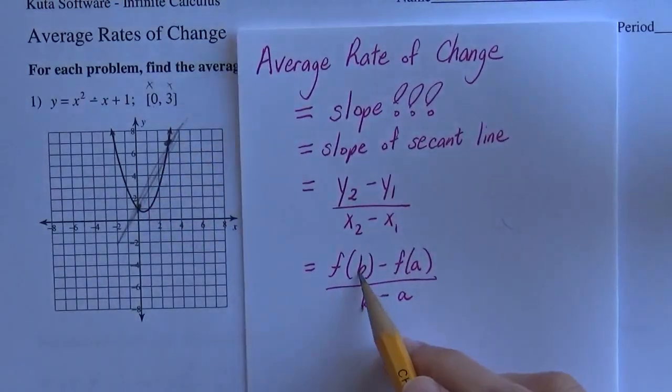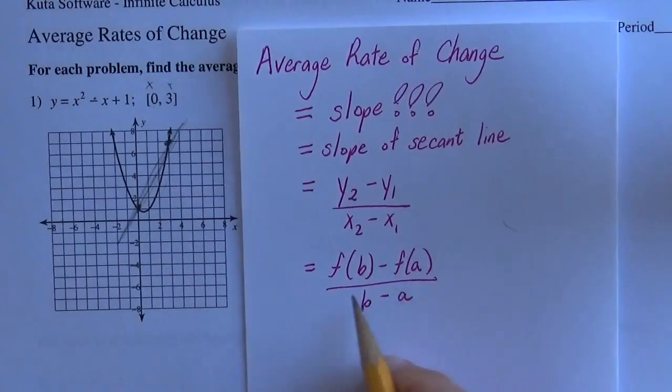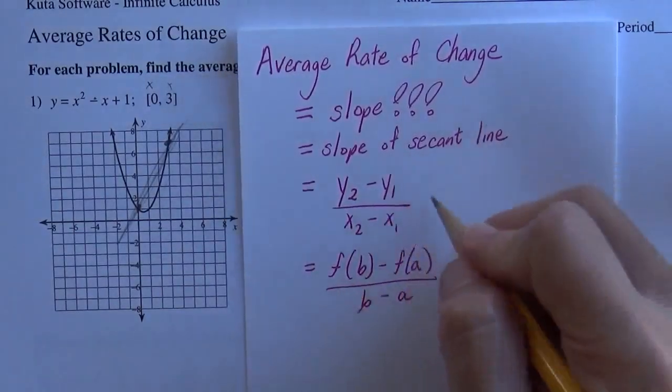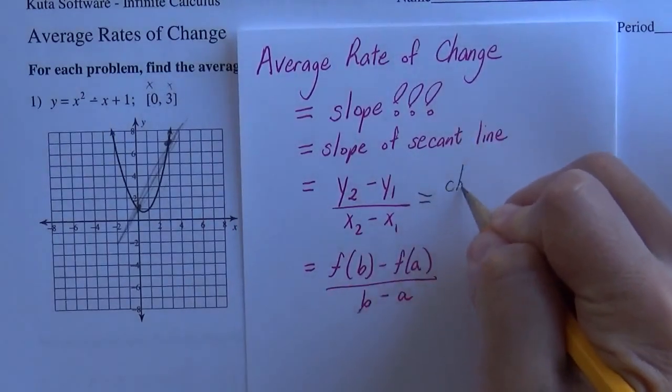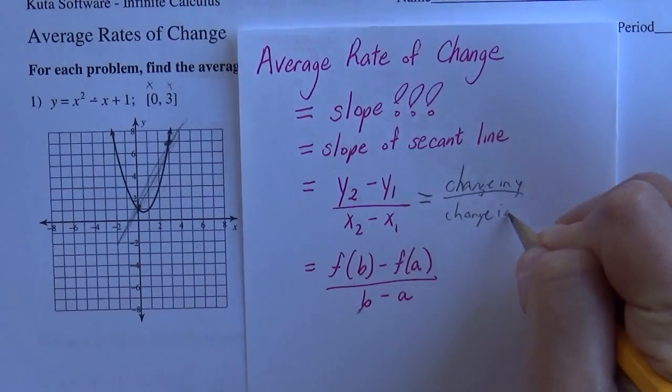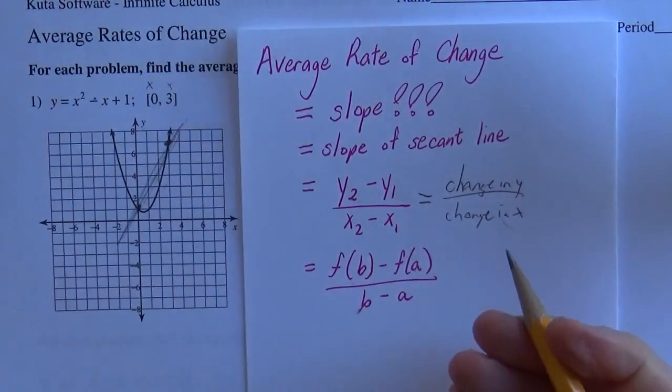They're going to give you this formula. I remember I was always scared of this formula when I was first taking calc. But it's the same as your y2 minus y1 over x2 minus x1, which is your change in y over your change in x. So how much are you going up versus how much are you going over?